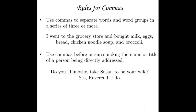Here are the rules for using commas correctly. First, use commas to separate words and word groups in a series of three or more — this is the list rule. For example: I went to the grocery store and bought milk, eggs, bread, chicken noodle soup, and broccoli. This last comma before the "and" is known as an Oxford comma. You do not technically have to use it; most major style guides now say not to use it, though many elementary school teachers still teach it. My rule is just be consistent — if you're going to use the Oxford comma, go for it; if not, go for it. Just stick to your guns.